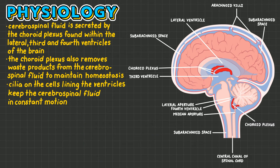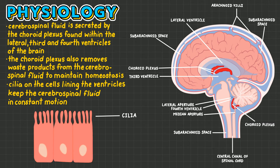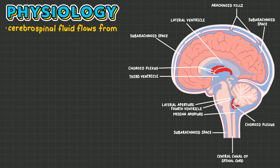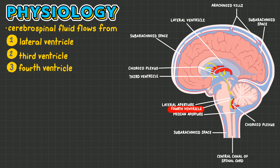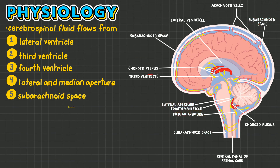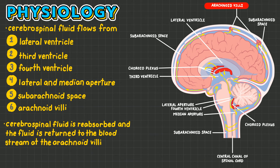Once cerebrospinal fluid is secreted, it is in constant motion due to cilia found on the cells lining the ventricles. Cerebrospinal fluid travels from the lateral ventricles to the third ventricle, to the fourth ventricle, to the lateral and median aperture, to the subarachnoid space, and finally to the arachnoid villi. The arachnoid villi is responsible for the reabsorption of cerebrospinal fluid, and returns it to the bloodstream.